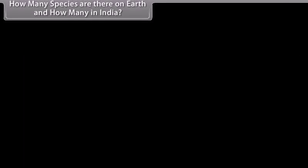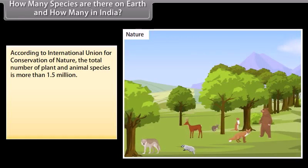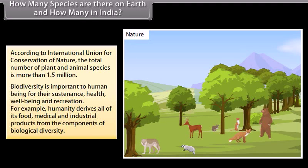How many species are there on earth and how many in India? According to the International Union for Conservation of Nature, the total number of plant and animal species is more than 1.5 million. Biodiversity is important to human beings for their sustenance, health,